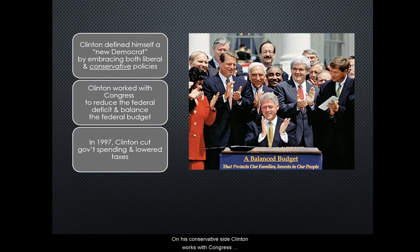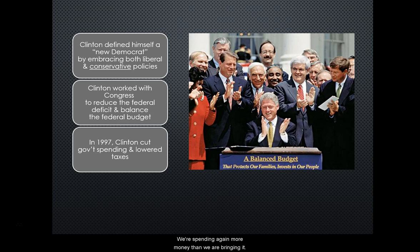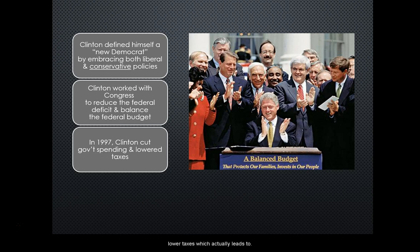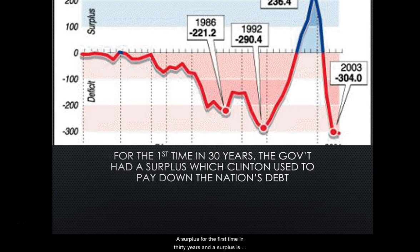On his conservative side, Clinton works with Congress to reduce the federal deficit and balance the federal budget, because at this point the country is spending more money than it is bringing in. That means we're in the red — we don't have enough money; we're in debt. And by 1997, Clinton cut government spending and lowered taxes, which actually leads to a surplus for the first time in 30 years. A surplus is when you have more money than you're spending.